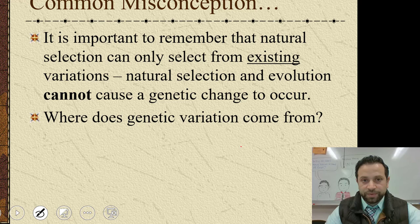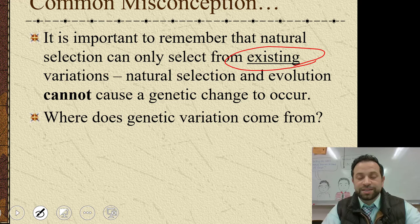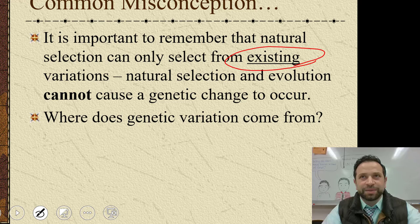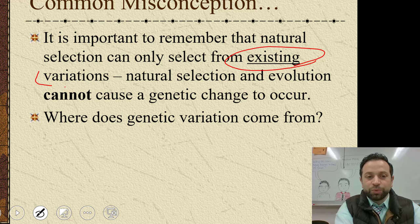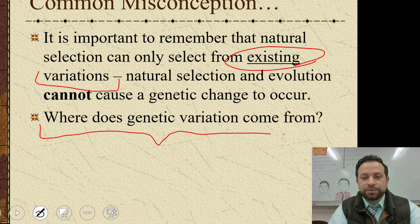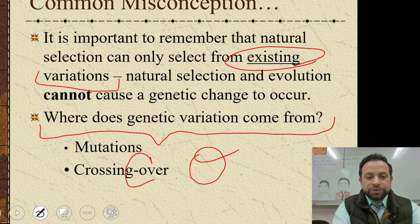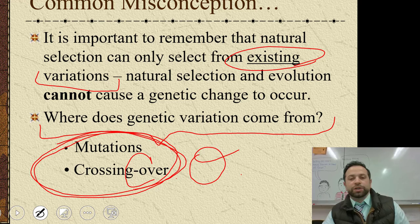Here's a common misconception: it's important to remember that natural selection comes from existing variations — whatever traits and genes are already in the population. Where does genetic variation come from? Two things you need to remember: crossing over and mutations. These are the two sources of variation you'll be asked about.